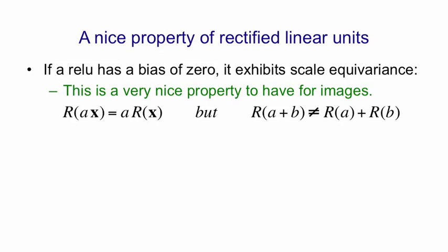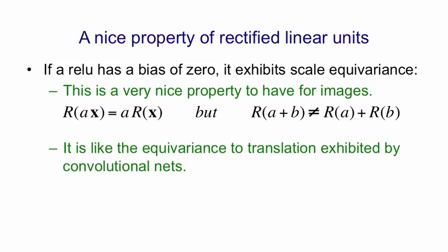This property of scale equivariance is quite similar to the property of translational equivariance that convolutional nets have. If we ignore the pooling for now, in a convolutional net, if we shift an image and look at the representation, the representation of a shifted image is just a shifted version of the representation of the unshifted image. So in a convolutional net without pooling, translations of the input just flow through the layers of the net without really affecting anything. The representation of every layer is just translated.